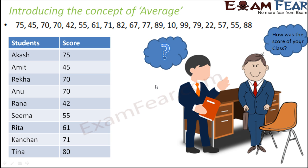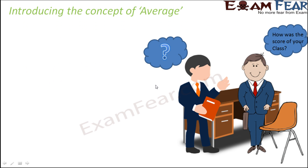That means there might be some students who scored more than 90, and there might be certain students who scored less than 50. But when you average them out — that means if we assume that all the students of the class obtained the same marks, they all obtained equal marks — in that case, we would say that each of them obtained 70. That is when we say that the average score of the class was 70. And exactly this is what the teacher does — he says that the average score of the class is 70.